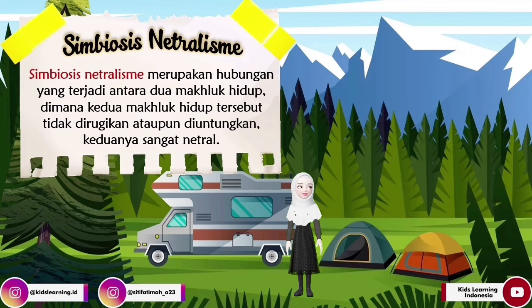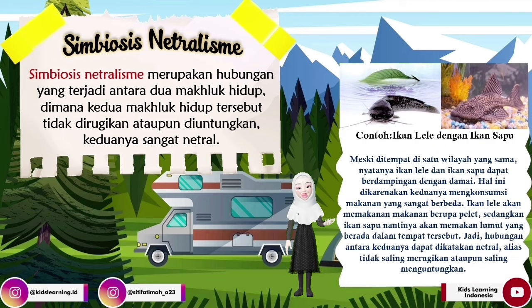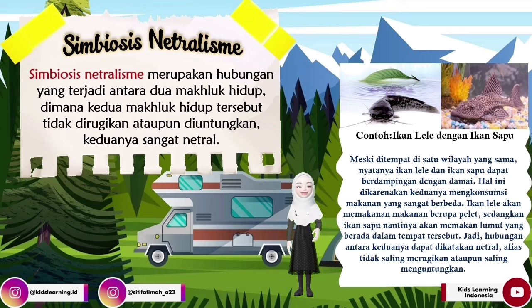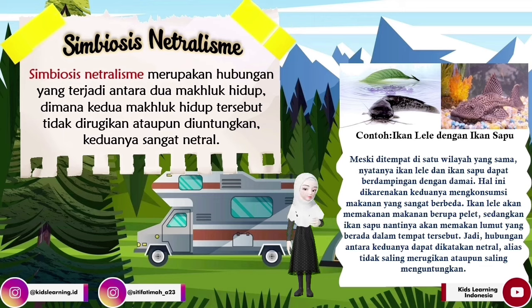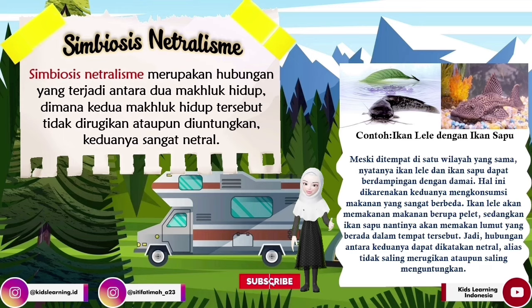Oke teman-teman, untuk contoh simbiosis netralisme selanjutnya yaitu ada interaksi ikan lele dengan ikan sapu. Meskipun berada di satu wilayah yang sama, nyatanya ikan lele dan ikan sapu dapat berdampingan dengan damai. Hal ini dikarenakan keduanya mengonsumsi makanan yang sangat berbeda: ikan lele akan memakan pelet, sedangkan ikan sapu akan memakan lumut. Jadi hubungan antara keduanya dapat dikatakan netral, alias tidak saling merugikan ataupun saling menguntungkan.